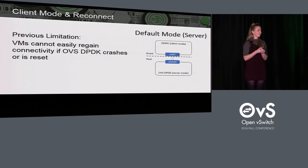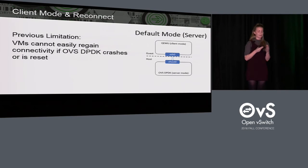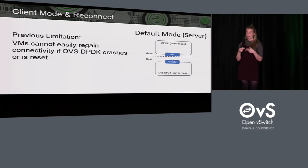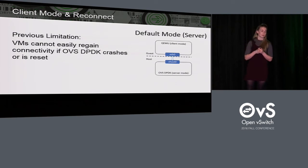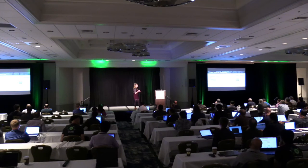Client mode was introduced to address a limitation with another common use case: when you reset the DPDK backend, VMs with vhost user ports can't regain connectivity easily — they actually need to be rebooted in the event of a switch failure. That's very inconvenient, especially in a production environment where you don't want to have to reboot your VMs every time you reboot your switch.